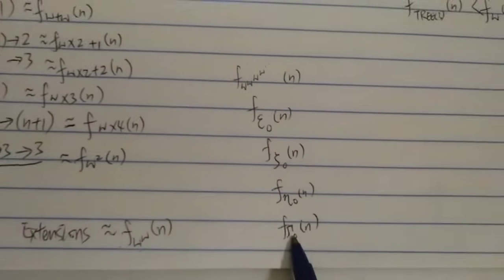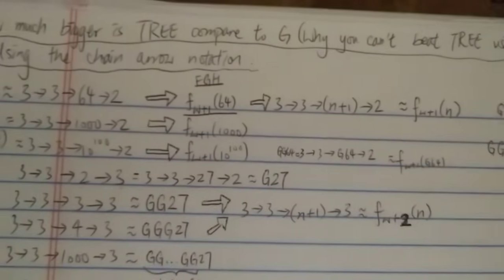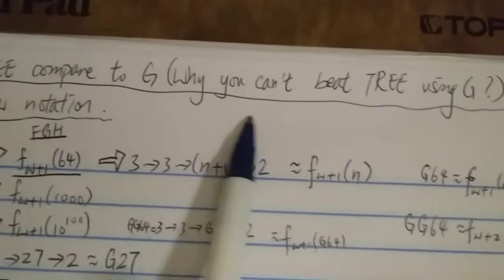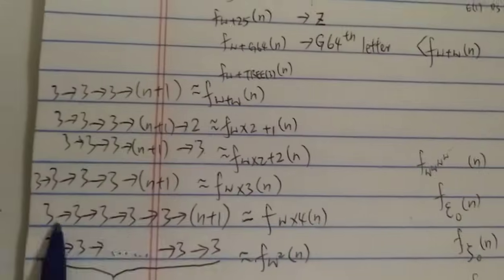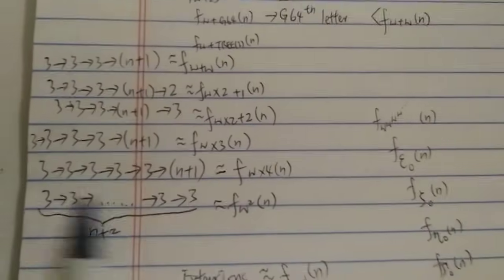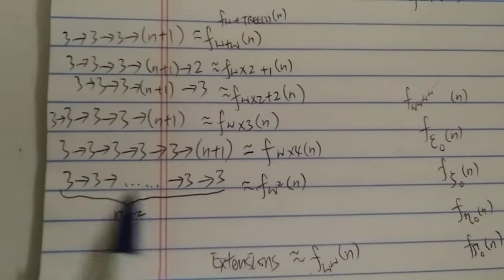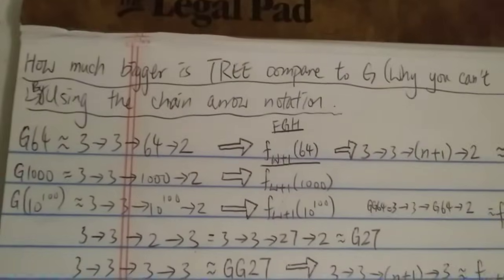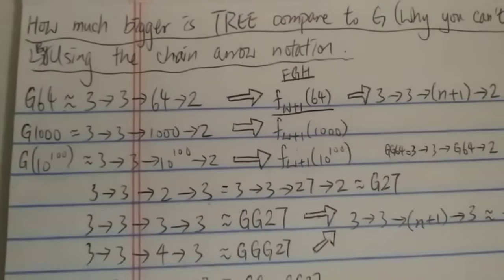So this is the video. This just shows you that you can never beat Tree(3) with G — not even with chain arrow. The same thing applies: you cannot beat these chain arrows using G's, and these chain arrows are nowhere near Tree(3). You cannot even beat Tree(3) using chain arrow. This is why you cannot beat Tree(3) with G, and this is how much bigger Tree(3) is compared to G. Thanks for watching and have a nice day.